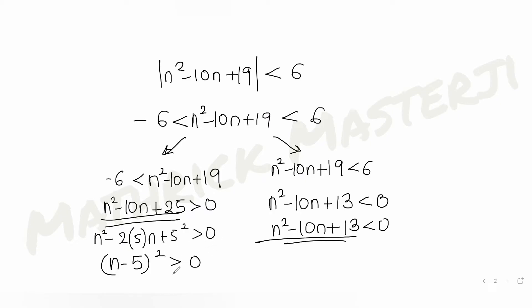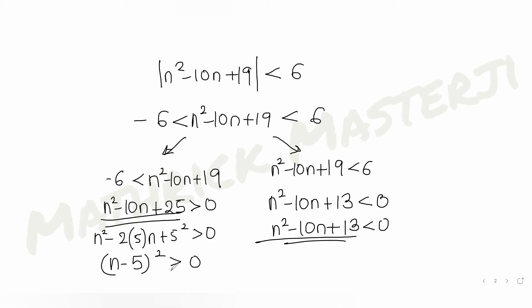When I get this expression n minus 5, the whole square is greater than 0, that tells me that square of anything is greater than 0 unless this n minus 5 turns equal to 0. So n cannot be equal to 5. I understand from the first expression that n belongs to all the integers except 5. If you put any other integer, whether positive or negative, the square of that is still positive.